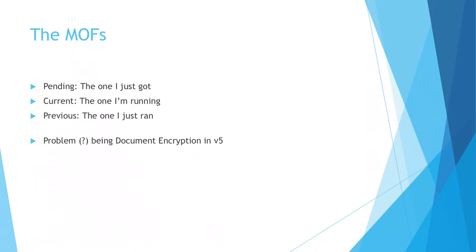You could do a hybrid approach — that's an extreme example. You could ship out a MOF with a lot of your base configuration, then call crazy resource to dynamically add in printer mappings or other local-intelligence things. You could evaluate the WMI repository, make decisions — you've got the full PowerShell scripting language at your disposal to create a new MOF that will run the next time.